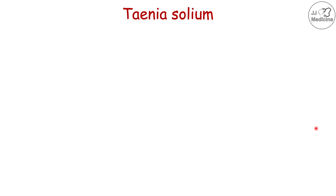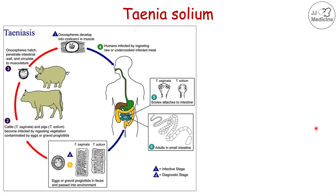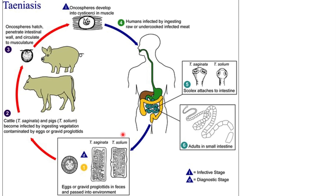Now that we've talked about the signs and symptoms common among the tapeworm species, let's get into more specific detail as to each species. We're first going to talk about Taenia solium. It all starts with proglottids and eggs in the environment, passed in feces. In the case of Taenia solium, pigs become infected by ingesting eggs from contaminated vegetation.